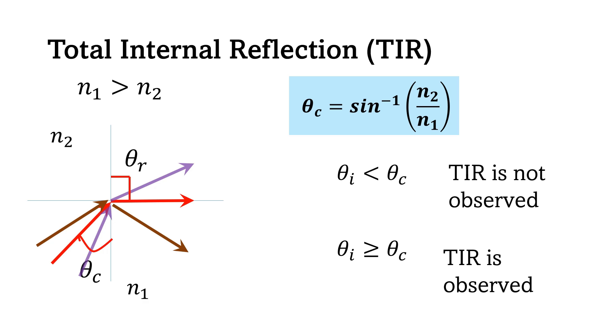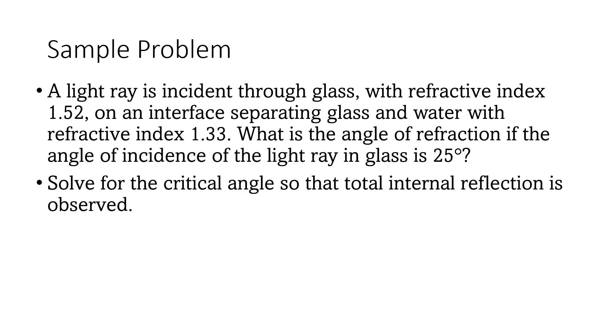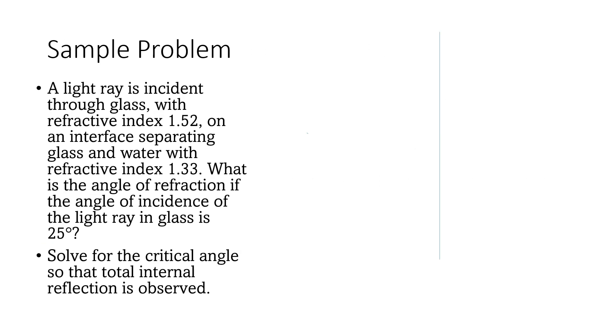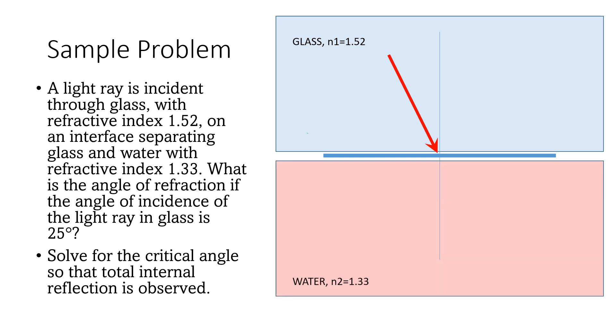To apply the formula, let's have this sample problem. A light ray is incident through glass with a refractive index of 1.52 on an interface separating glass and water with refractive index of 1.33. What is the angle of refraction if the angle of incidence of the light ray in glass is 25 degrees? And solve for the critical angle so that total internal reflection is observed.